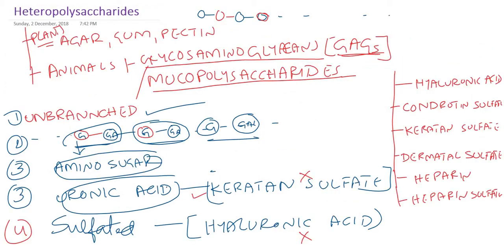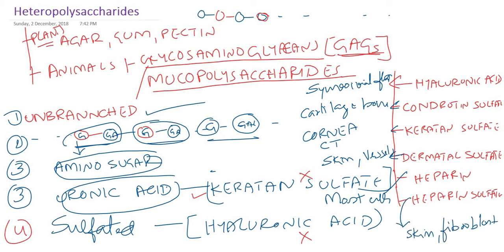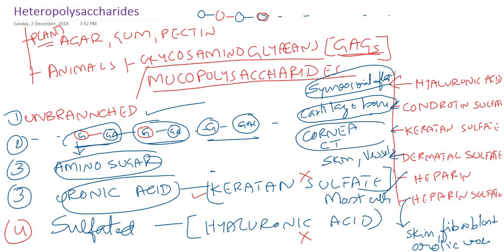Looking at the occurrence of glycosaminoglycans: hyaluronic acid is found in joints and synovial fluid. Chondroitin sulfate is found in cartilage and bone, especially at calcification sites. Keratan sulfate is found in cornea, connective tissue, and cartilage. Dermatan sulfate is found in the skin and blood vessels — arteries and veins. Heparin is found in intracellular mast cells. Heparin sulfate is found in skin, fibroblasts, and the wall of the aorta.